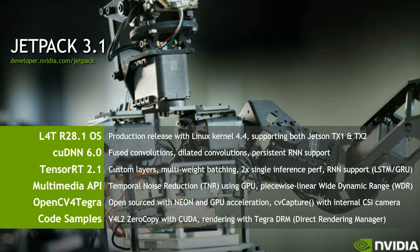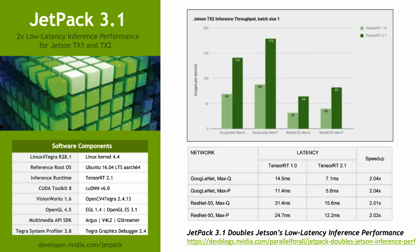You'll be able to download the JetPack 3.1 update from the URL shown here. JetPack is run from a host machine to reflash the TX1 or TX2 in recovery mode. You connect it to the host over micro-USB and Ethernet, and after it's flashed with JetPack, you can run the Jetson like an ordinary PC, or you can still cross-compile from the host to the target like a traditional embedded environment. Let's take a look at the latest performance figures taken from JetPack 3.1, provided for measurements of the GoogleNet and ResNet-50 image recognition networks. With JetPack 3.1, Jetson TX2 gets up to 80 frames per second with ResNet and 180 frames per second with GoogleNet when processing a single image at a time, or batch size 1.